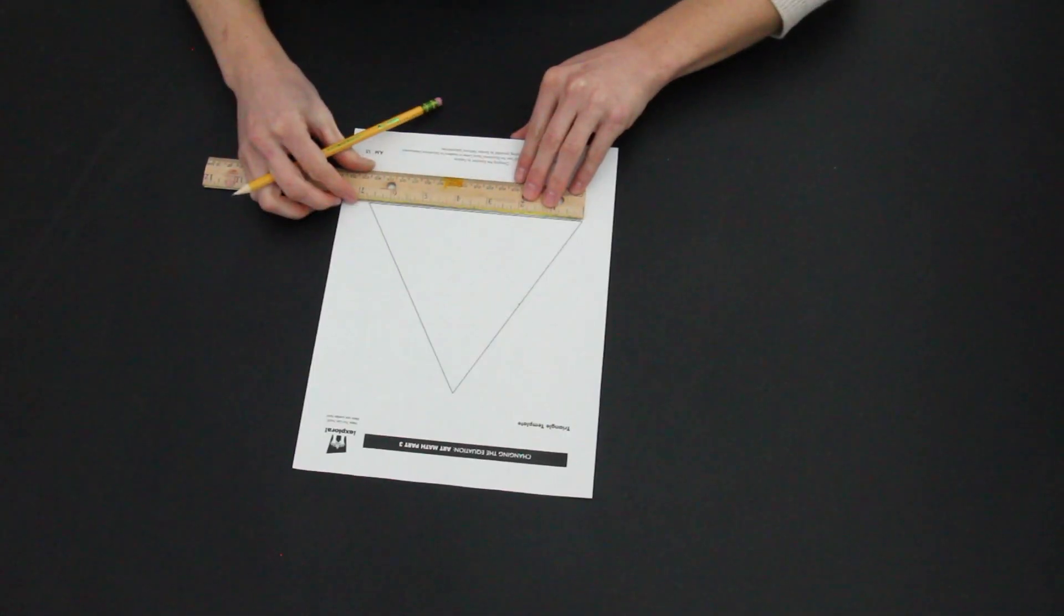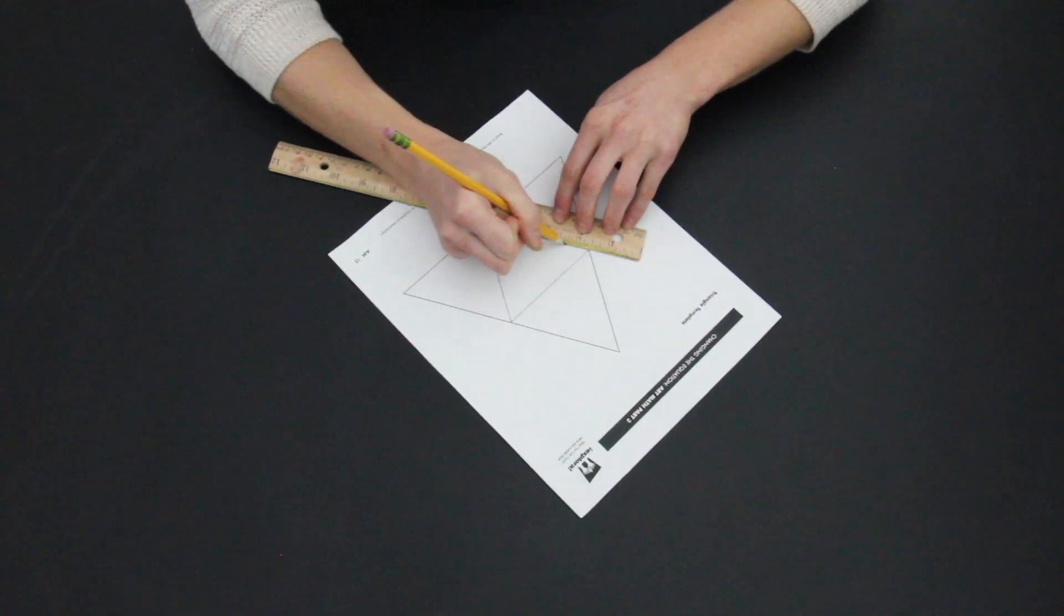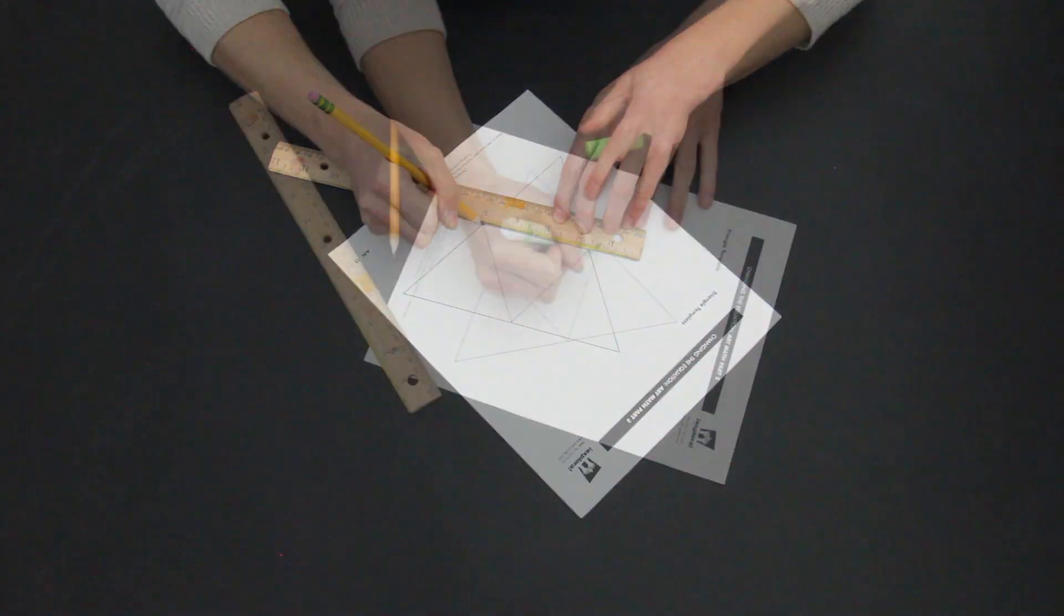Using the ruler, measure each side of the triangle and put a small mark at the midpoint of each side. Now use the ruler to draw a line connecting the midpoints to form a new triangle in the middle of the big one.